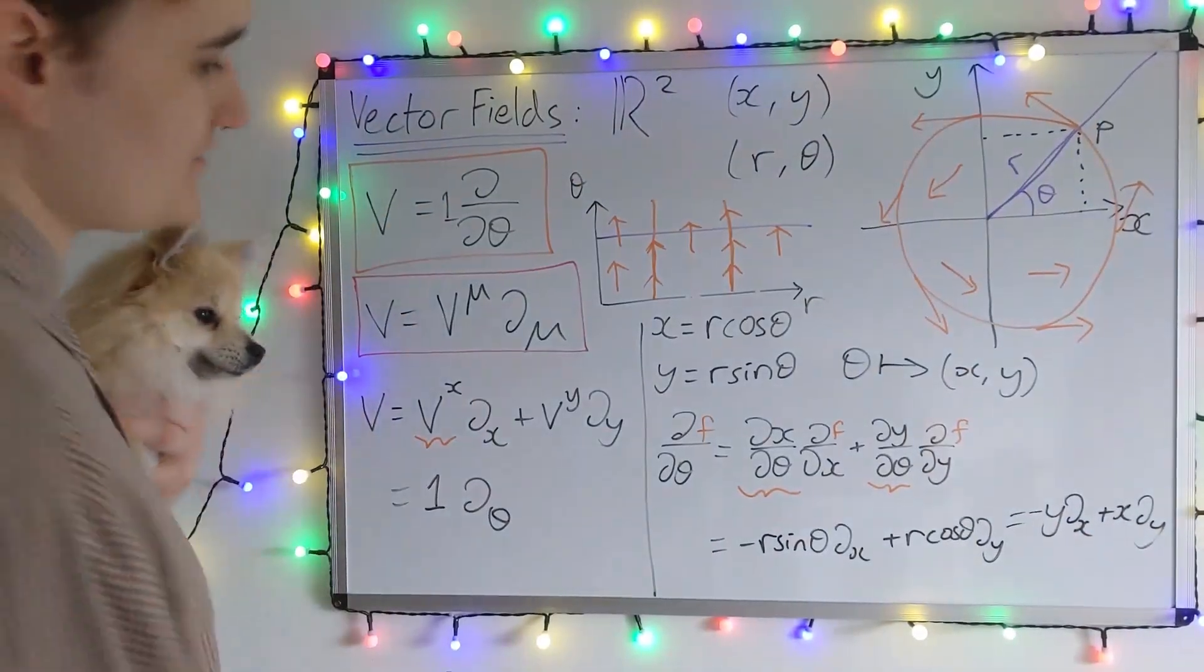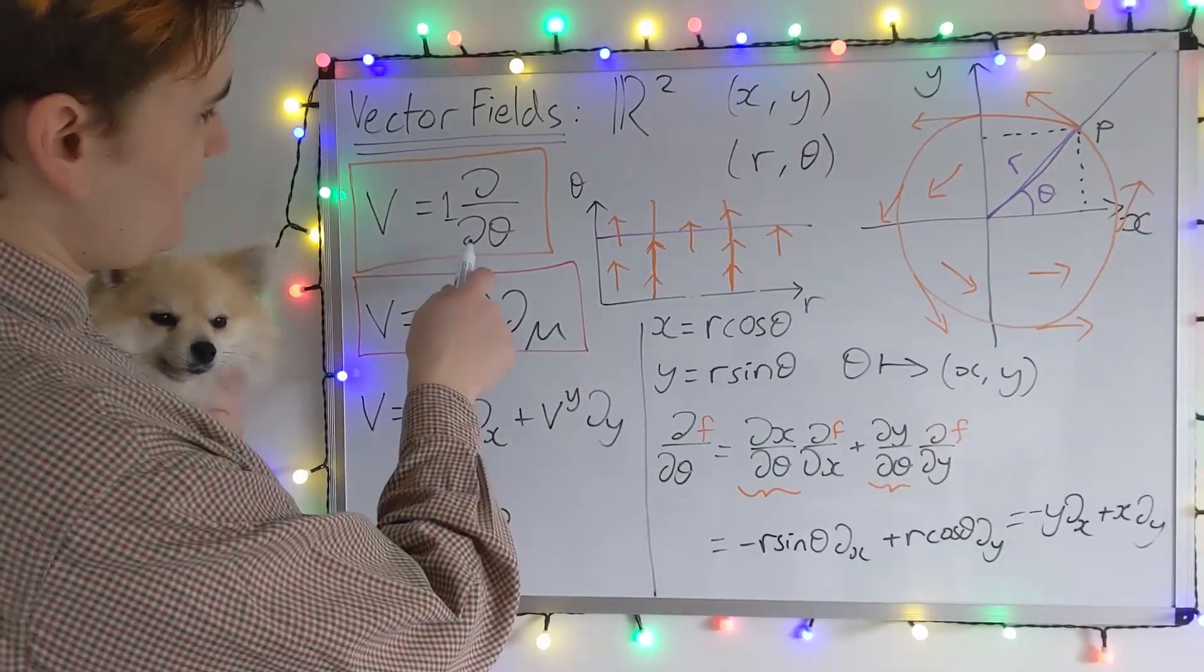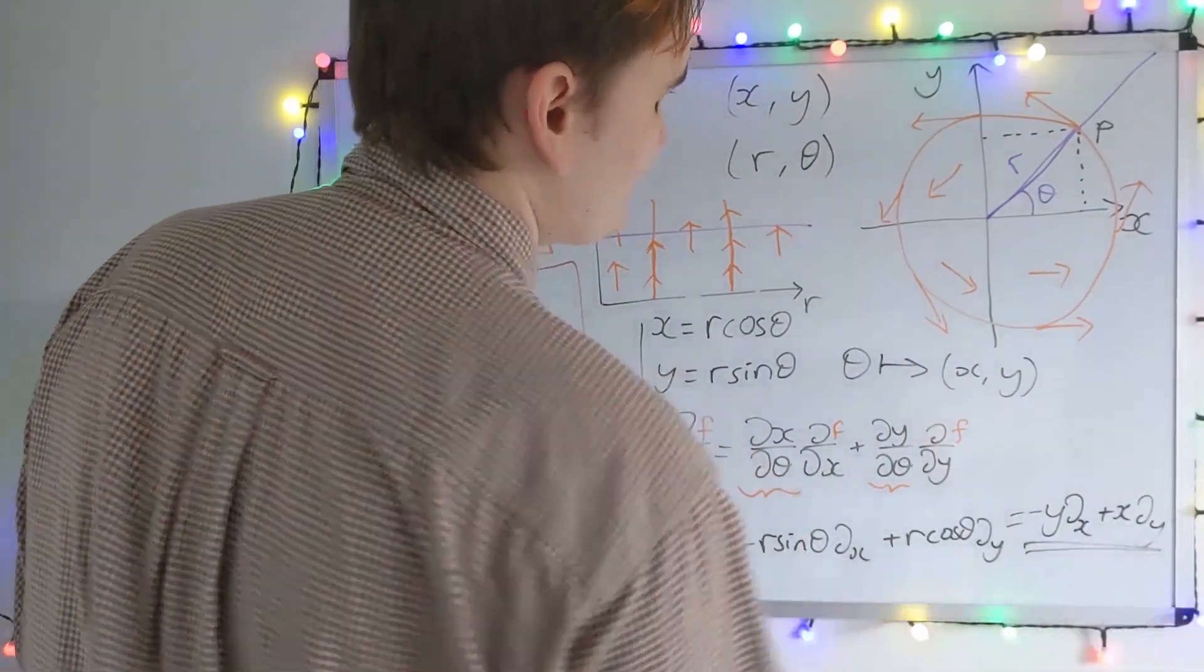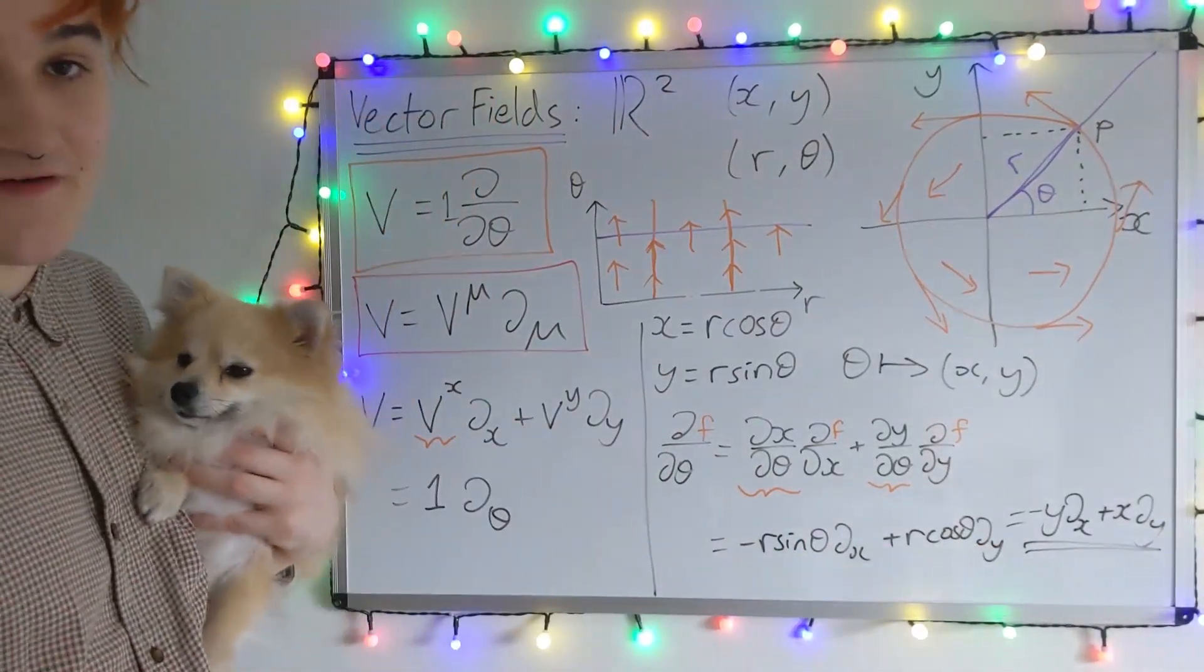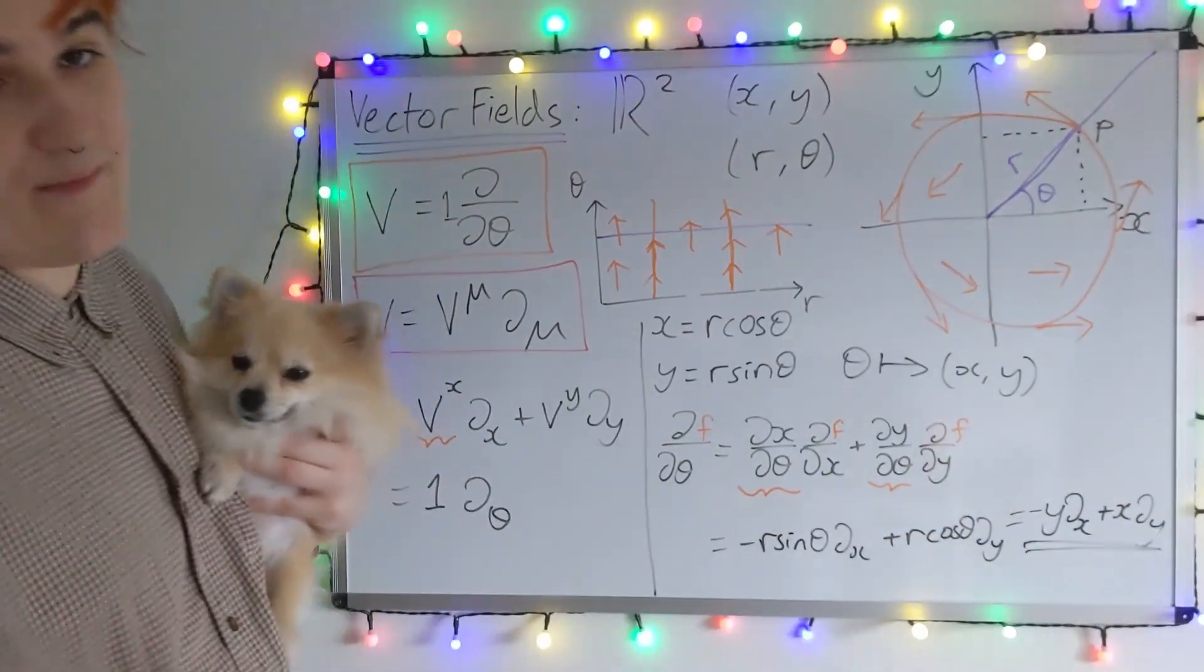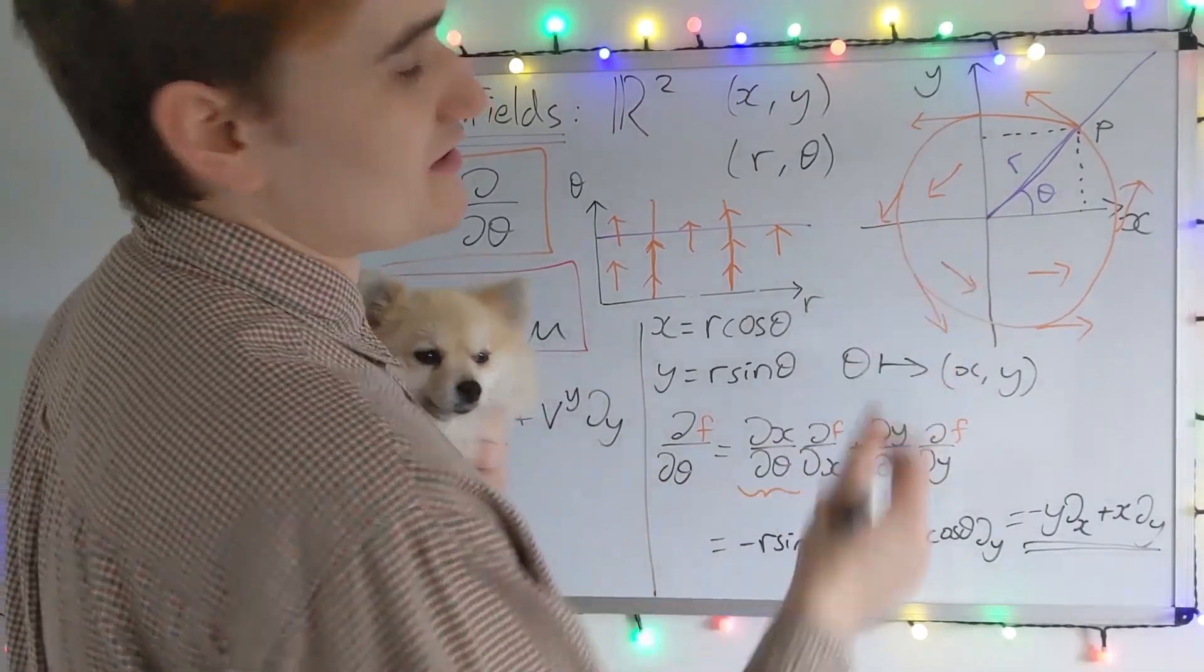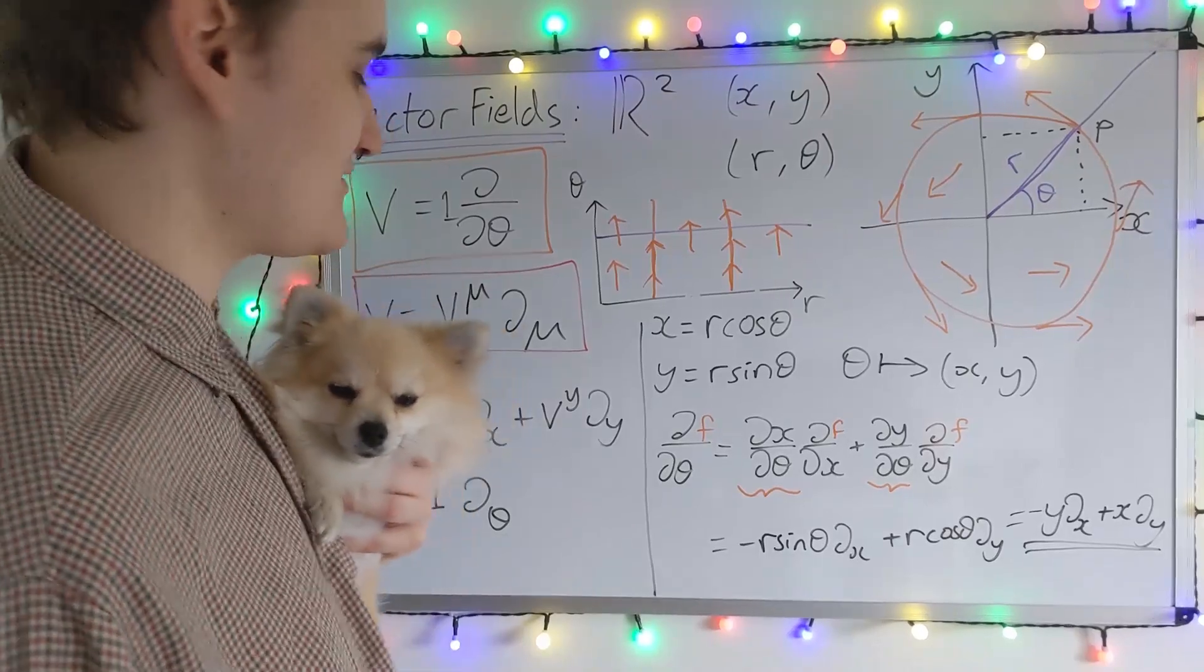Okay, so what I've essentially derived now is the expression for the D by Dθ vector field, this counterclockwise spiraling field in the XY coordinates. So maybe you've seen an expression like this before. If you've ever taken a quantum mechanics course, you'll recognize this as the angular momentum operator in the Z direction, which is intuitively clear since we're talking about a counterclockwise spiraling vector field.